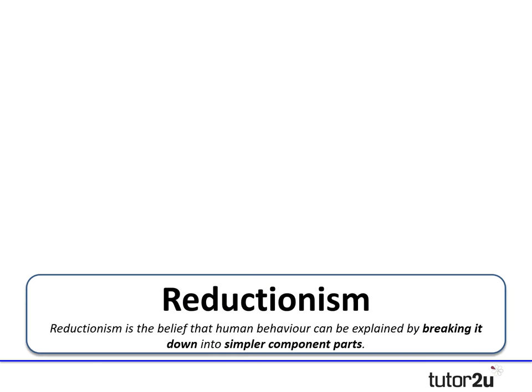Starting with the term reductionism: reductionism is the belief that human behaviour can be explained by breaking it down into more simple component parts. Those who take a reductionist position believe that the best way to understand behaviour is to look closely at the parts that make up our different systems, whether biological or psychological, and then choose the most simple explanation to understand how our behaviour works.